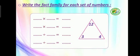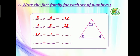The first one: 3 times 4 equals 12. 4 times 3 equals 12. And if we want to find the division: 12 divided by 3 equals 4. 12 divided by 4 equals 3.